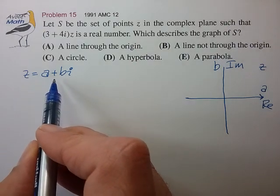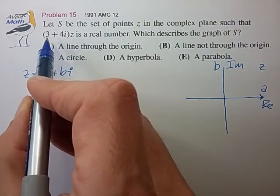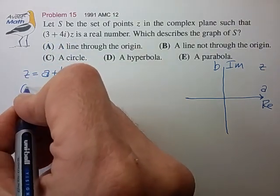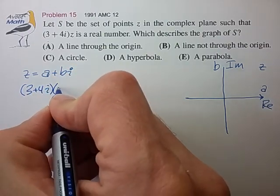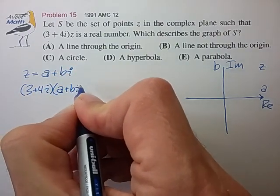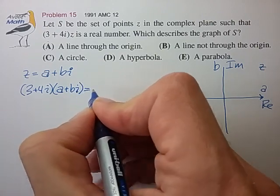All right, so let's take z and plug it into our product, 3 plus 4i times a plus bi, and expand that out.